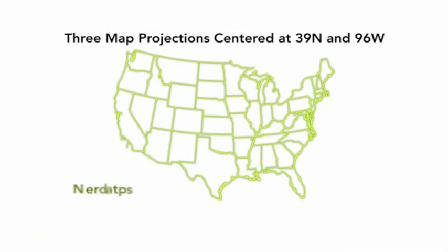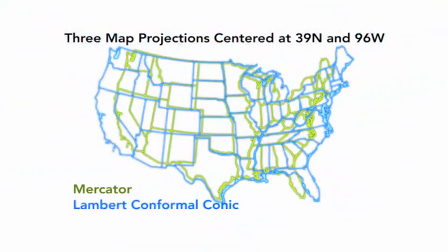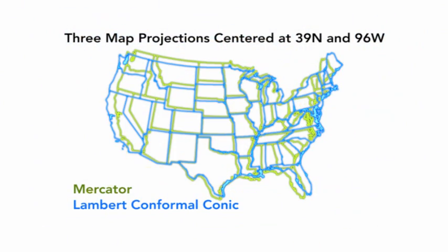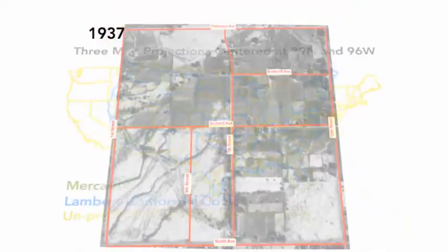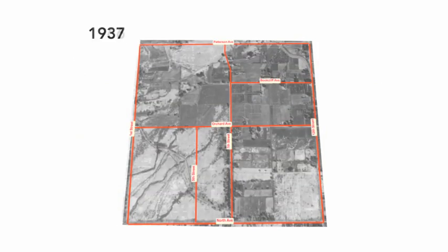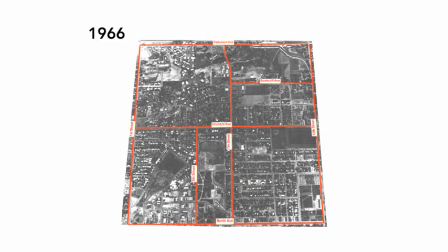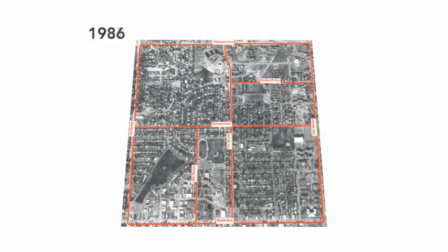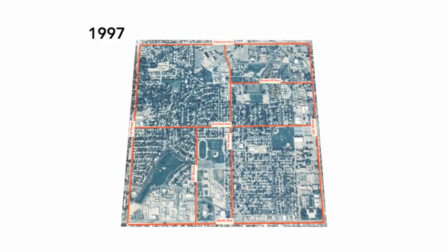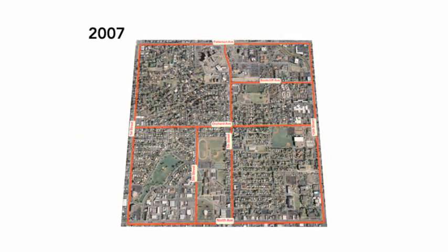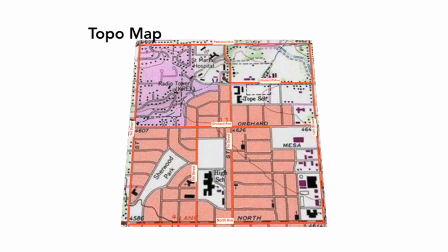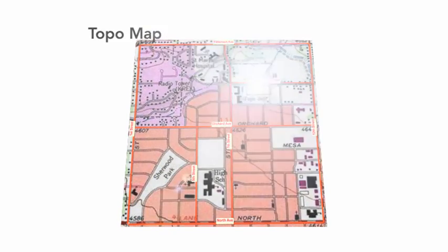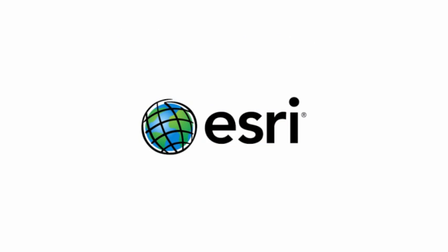The GIS user must decide which distortions are less important than others and then choose the appropriate map projection. GIS software such as ArcGIS can take the data and metadata and overlay each data set in the desired projection, enabling the user to be productive as quickly as possible. To be successful in GIS,